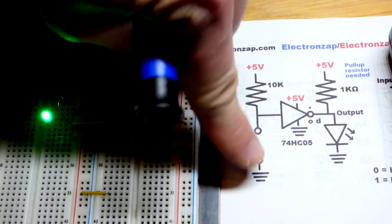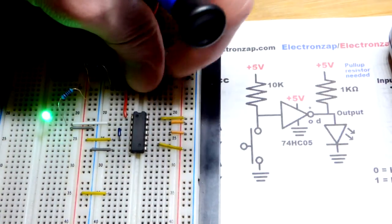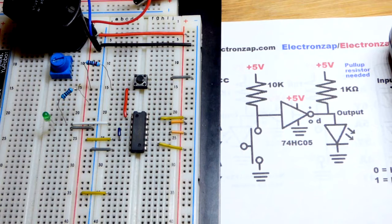We press the button, we give a low input, and we have a high output. The LED is on.